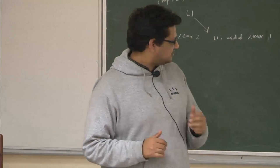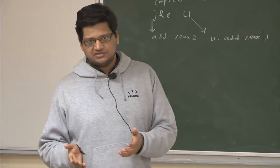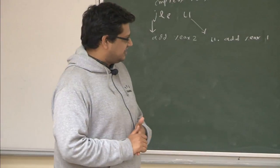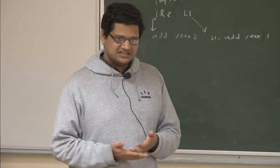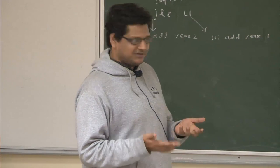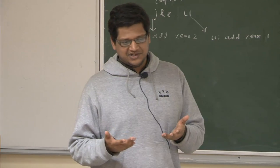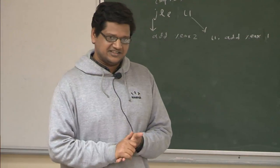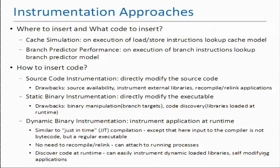Static binary instrumentation is similar to source code instrumentation, but instead of modifying the source code, you directly modify the executable binary file of the application. It suffers from similar drawbacks — you need to know the binary format, and when inserting extra code in the binary, instruction addresses may change, so branch targets must also be updated.